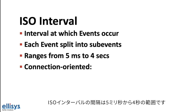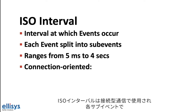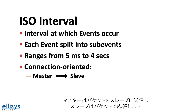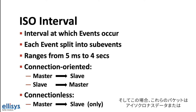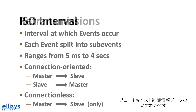In connection-oriented communication, in each sub-event the master will send a packet to the slave and the slave will respond with a packet. In connectionless communication, however, only the master will send a packet in each sub-event, and in this case these packets could either be isochronous data or broadcast control information data.